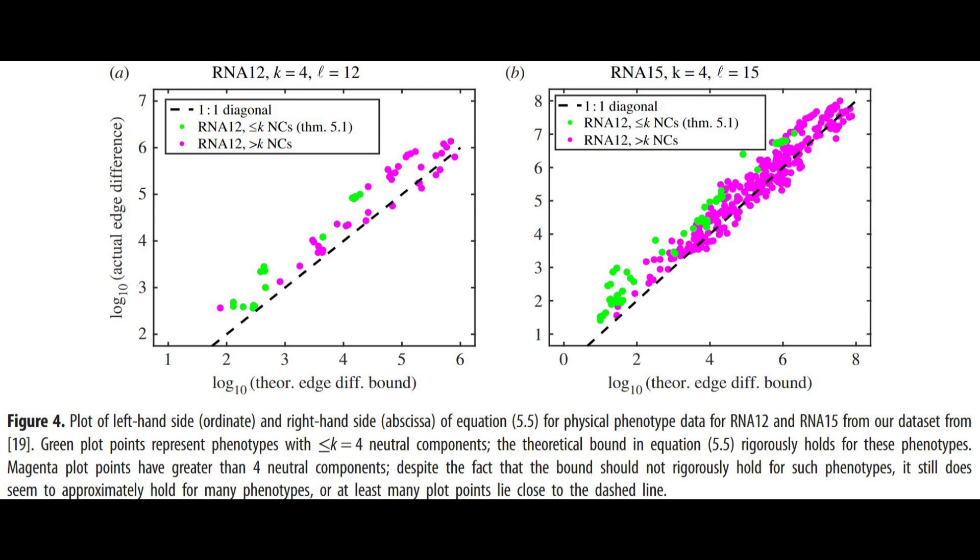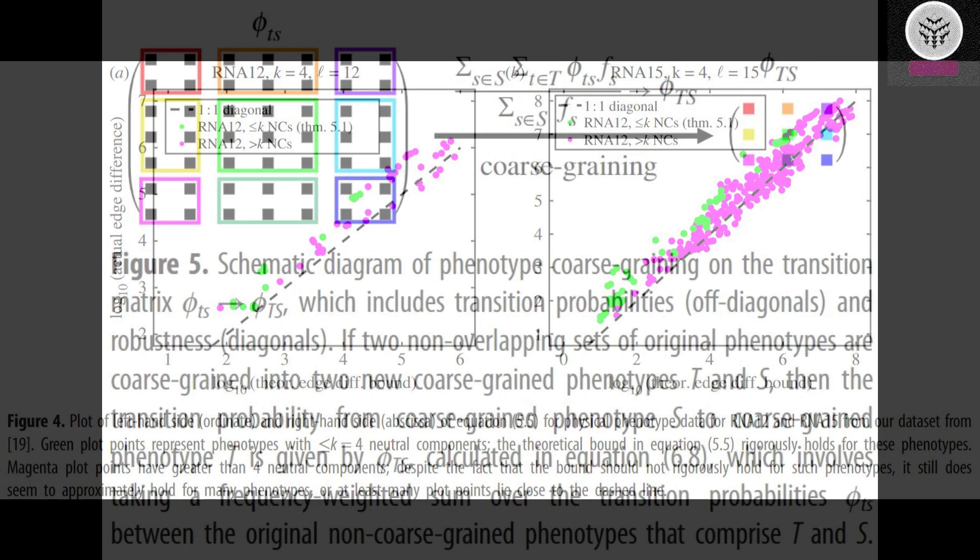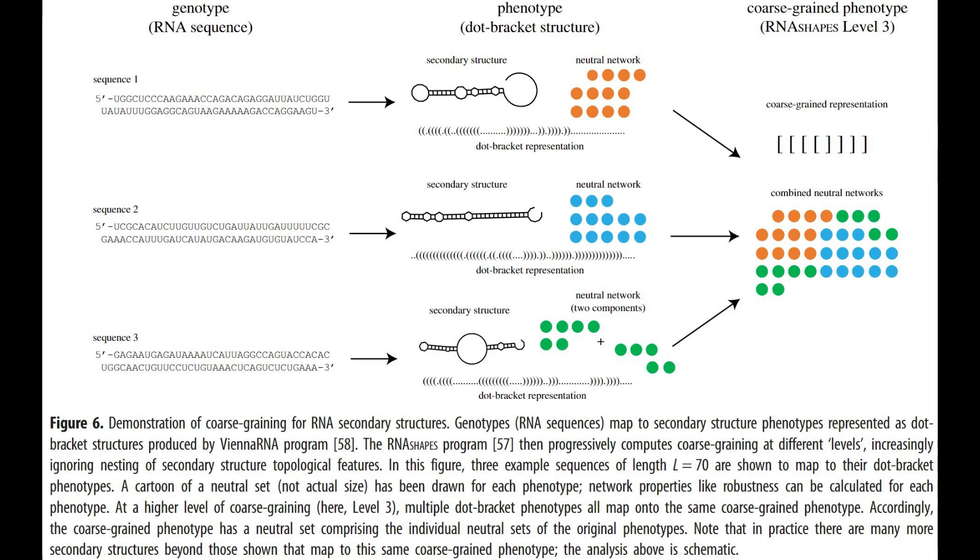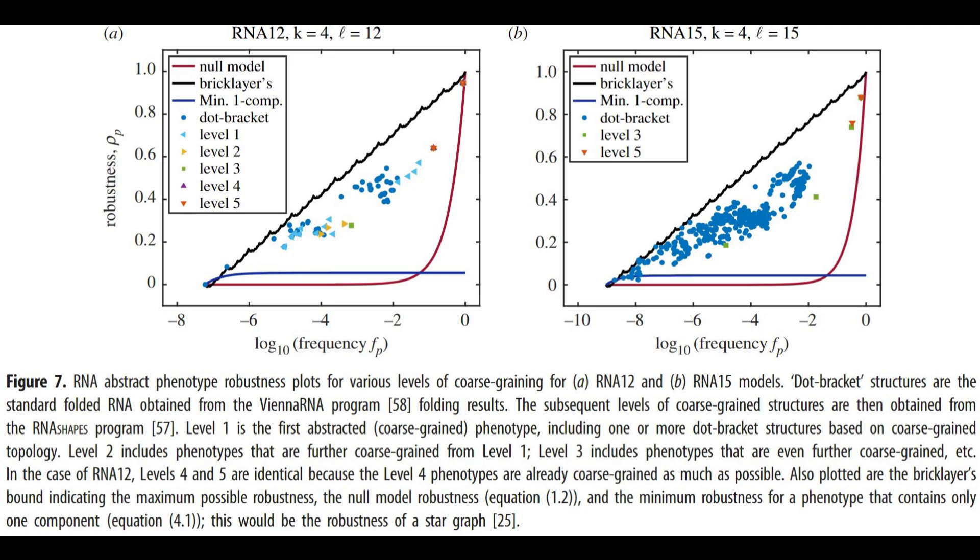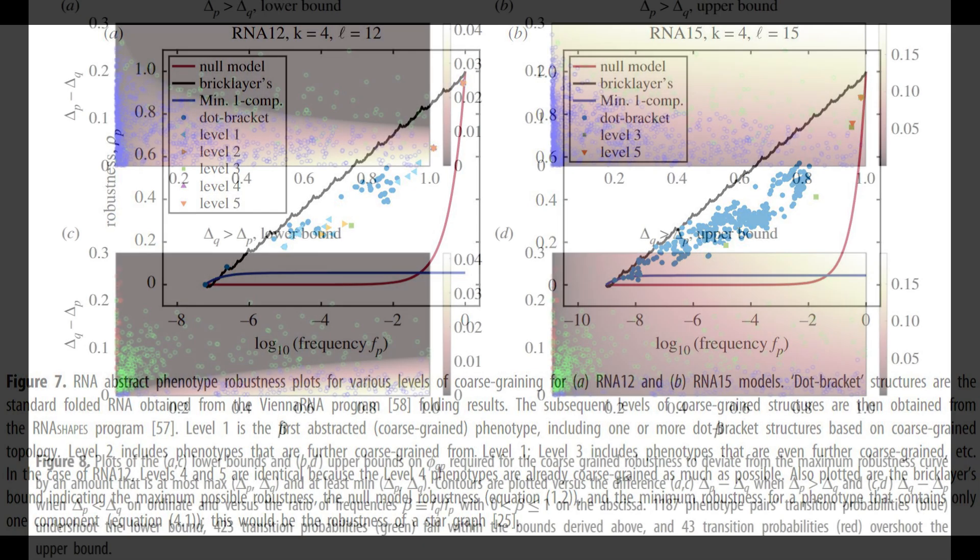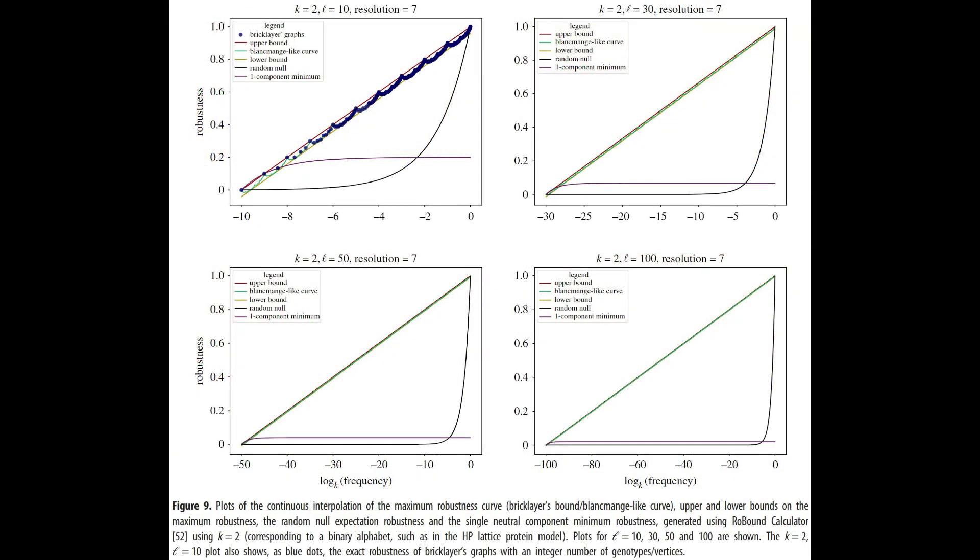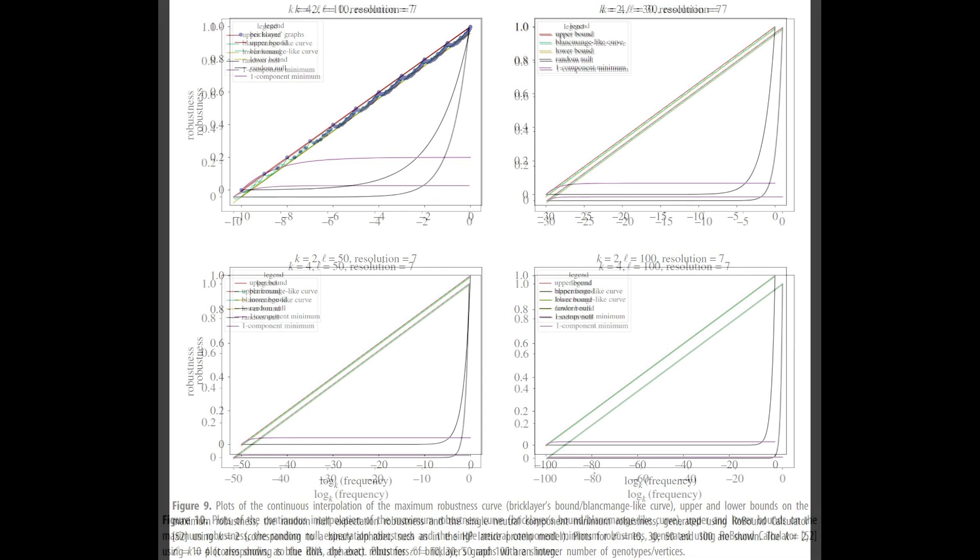Specifically they have established a link between the sums of digits function from number theory and a crucial aspect of genetics known as phenotype mutational robustness. This refers to the average likelihood that a point mutation will not alter a phenotype. The team has successfully demonstrated that the maximum level of robustness is directly proportional to the logarithm of the fraction of all possible sequences that correspond to a phenotype with an adjustment provided by the sums of digits function.